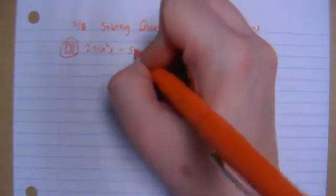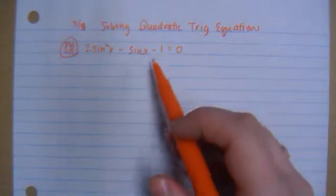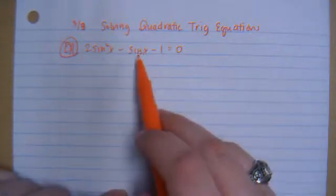Okay, so yesterday we just solved regular trig equations. Today we're going to be talking about quadratic trig equations, so you're going to have to be factoring. So if we look at the first example, I have 2 sine squared x minus sine x minus 1 equals 0. Think about this as if it was just x squared and x.